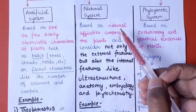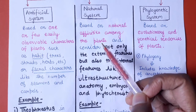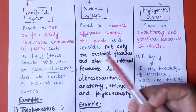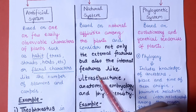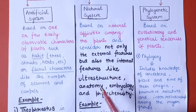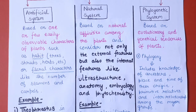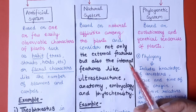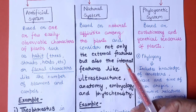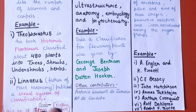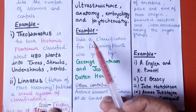The natural system of classification is based on natural affinities among the plants. It considers not only external features but also internal features like ultrastructure, anatomy, embryology, and phytochemistry. So the natural system of classification involves the incorporation of both external and internal features for the classification of plants.